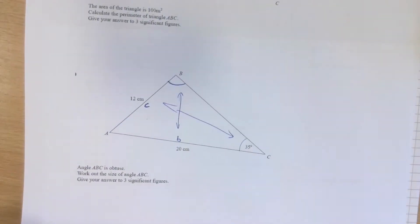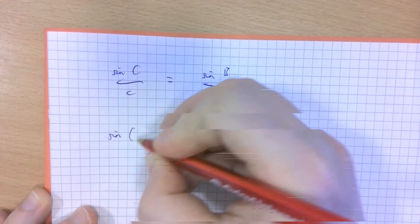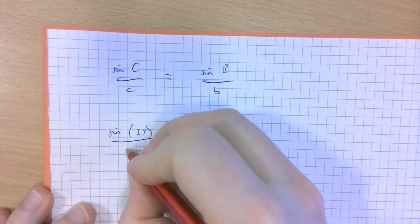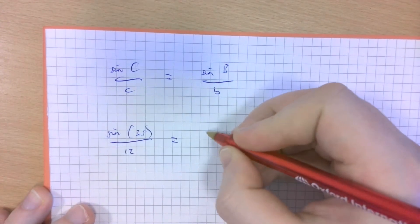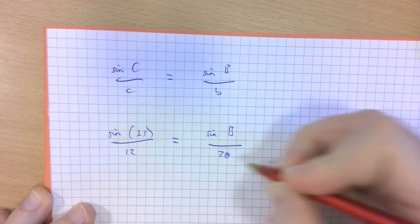Substituting in the values that we've got in this question. Angle C, not to be mistaken for a seaside resort town, is 35 and length C is 12. Angle B is what we're looking for but we know the opposite side length is 20.